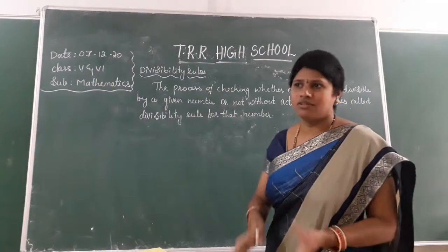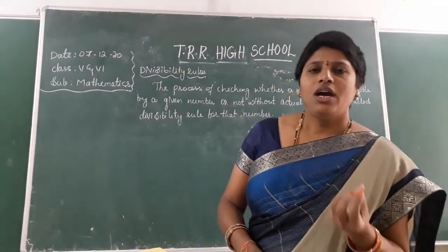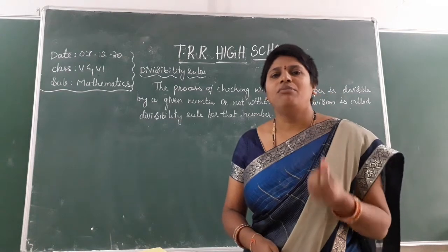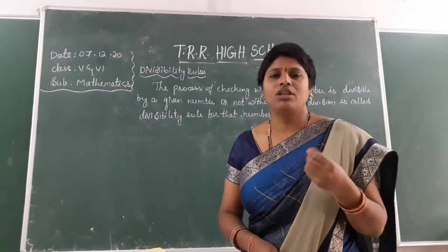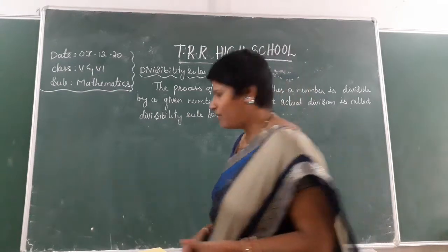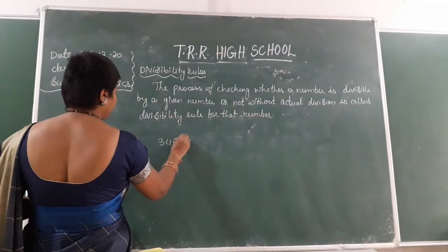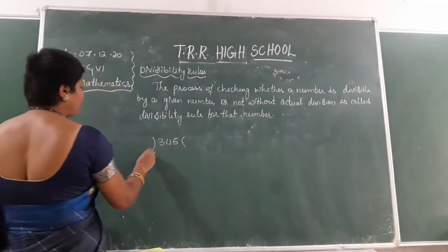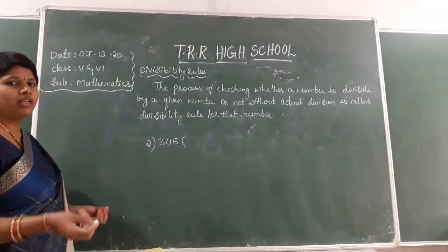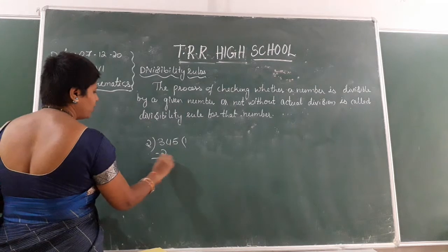What are divisibility rules? Suppose a number is given and I want to check whether that number is divisible by 2, 3, or 4. What would I do? Definitely I would go for a division.